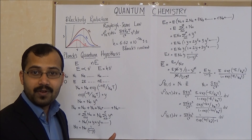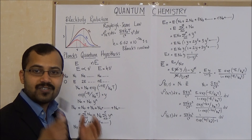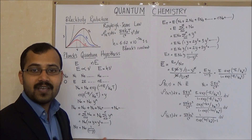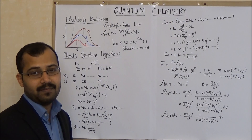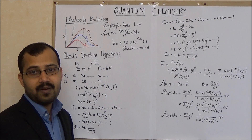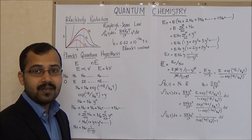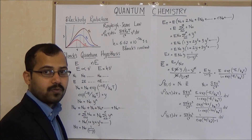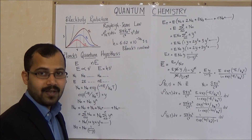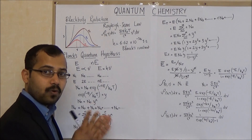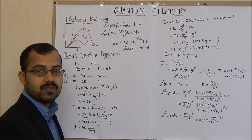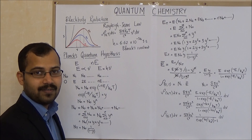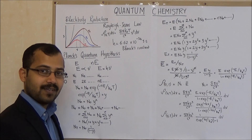So Max Planck introduced the quantum hypothesis in order to explain black body radiation, and it was a revolution in the history of physics. Initially scientists were reluctant to accept this idea, but soon Albert Einstein realized the importance of Planck's quantum hypothesis and used a similar quantum hypothesis to explain the photoelectric effect, which we will learn in the next class.